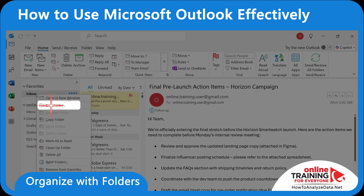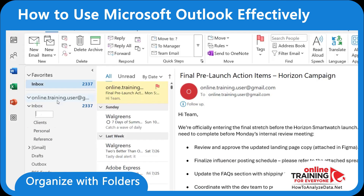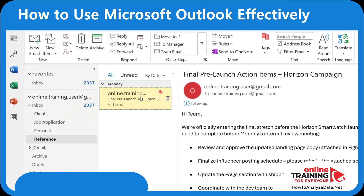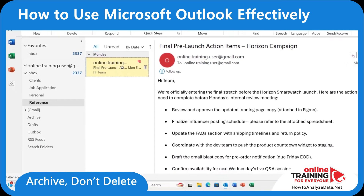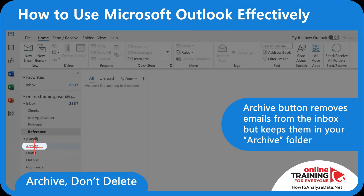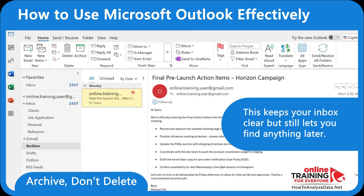You can also set up custom folders and organize based on your workflow. Let's set up folders for clients, personal, reference, and job application, and then spend two minutes a day dragging key emails into those folders. You can also archive emails instead of deleting. The Archive button in Outlook removes emails from your inbox but keeps them in your archive folder, keeping your inbox clear while still letting you find anything later.